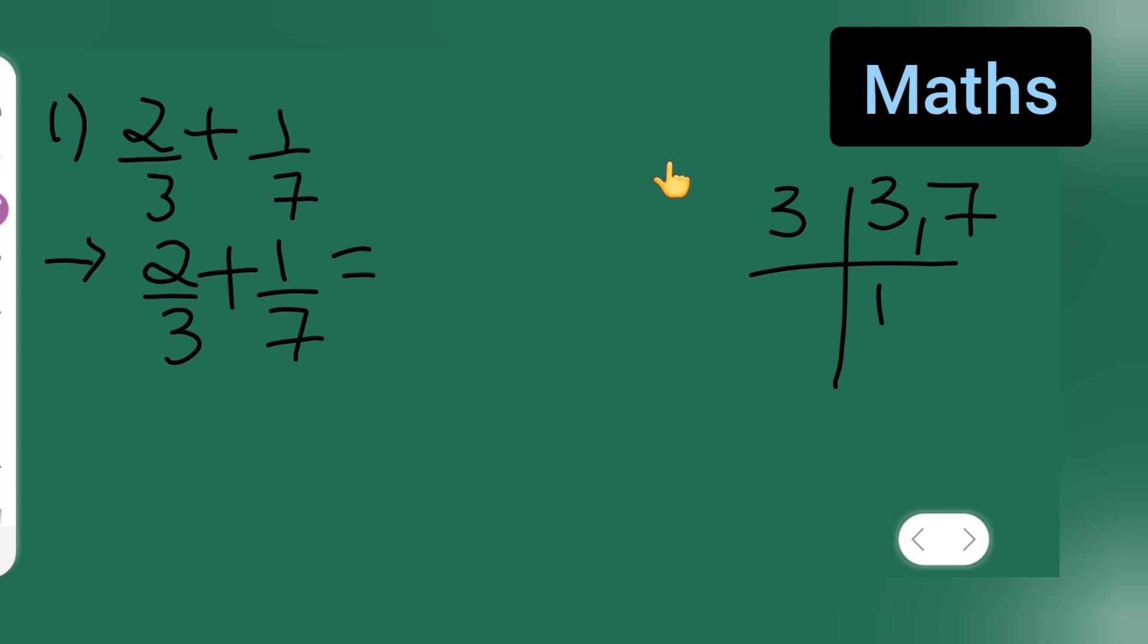Here 3 goes up and here write 7 as it is, then 7 goes up. So 3 multiplied by 7 will be 21. So you have to find the LCM, so here...